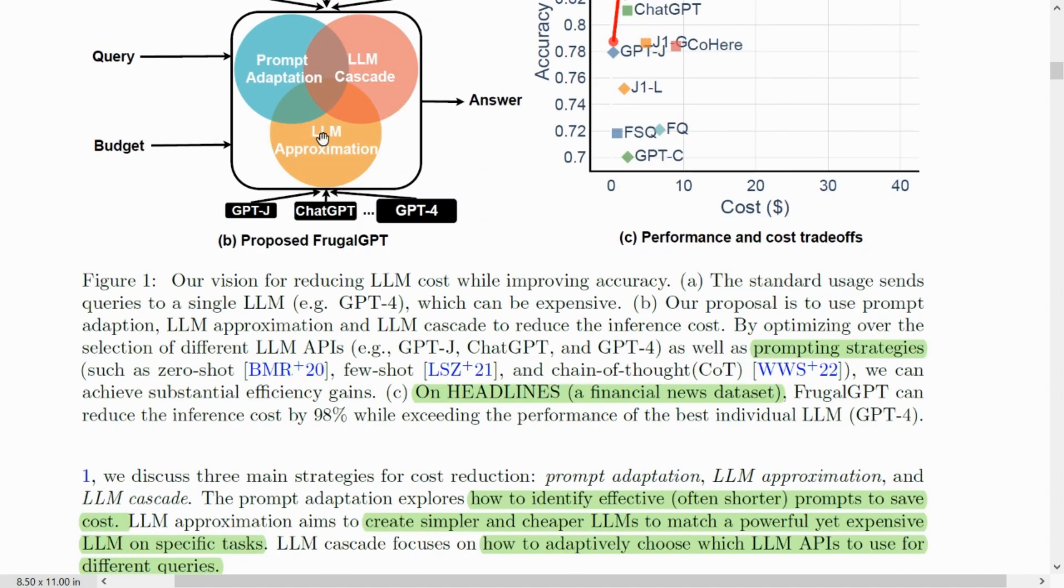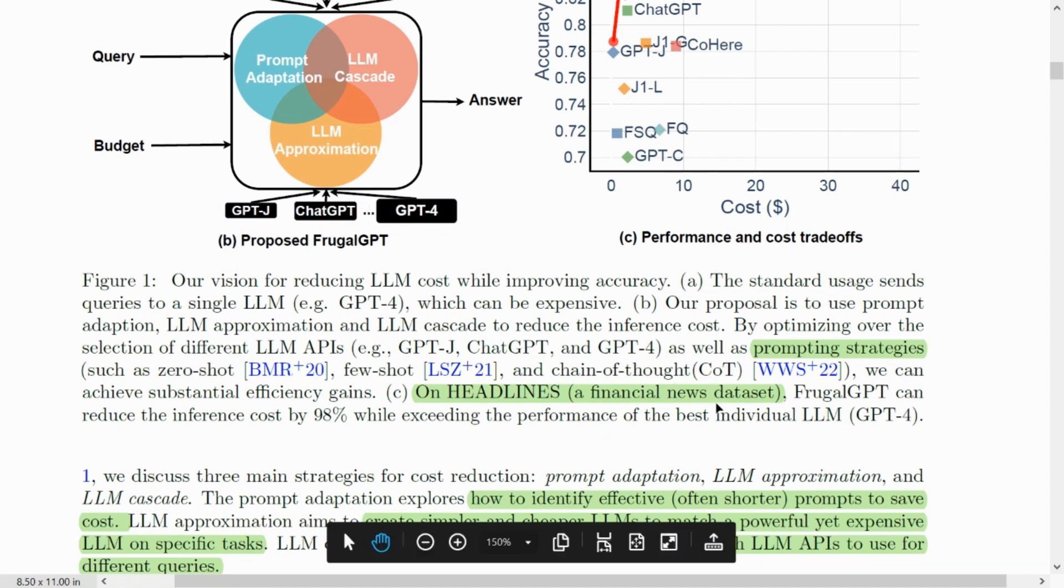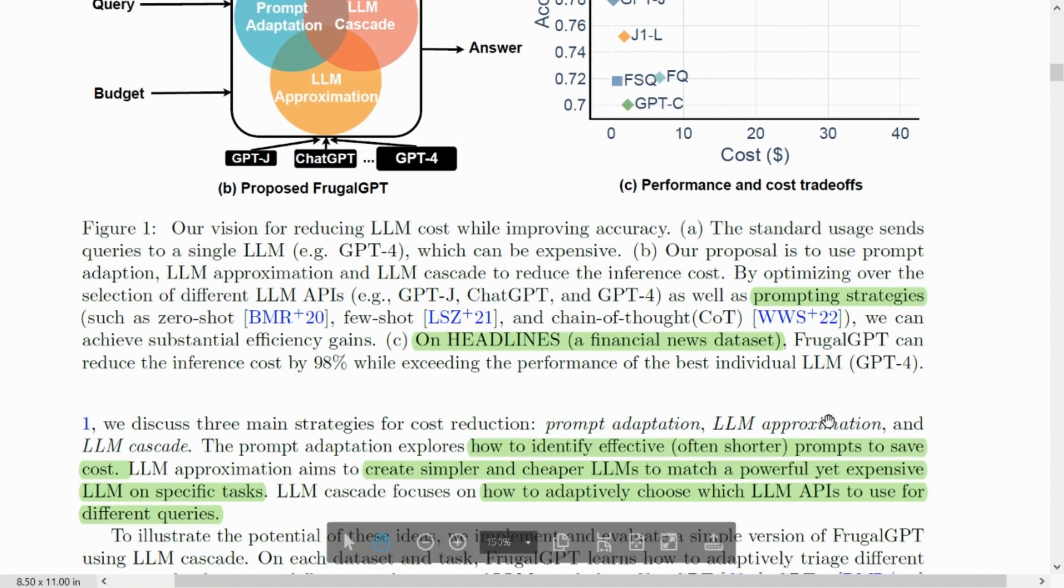The different strategies that they have used: the first is prompt adaptation, which is used to identify effective or shorter prompts to save cost. Basically, we want to reduce or minimize the size of the prompts. The next strategy is LLM approximation. Here, we try to create simple LLMs that will match the performance of a powerful yet expensive LLM on specific cases. The third method is LLM cascading. Here, we adaptively choose which LLM APIs to use for our specific purposes and for different queries.